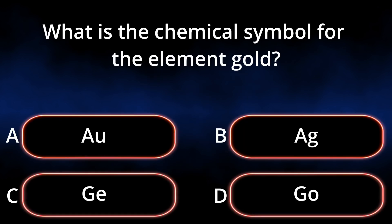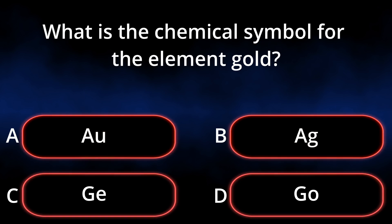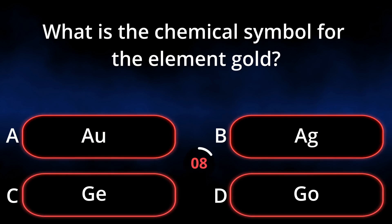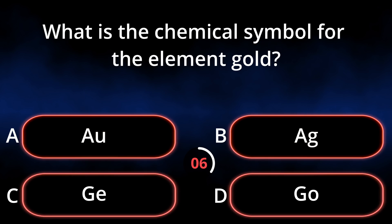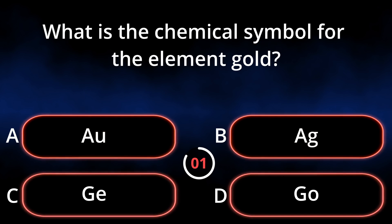What is the chemical symbol for the element gold? A. AU. B. AG. C. G. D. GO. Answer: AU.